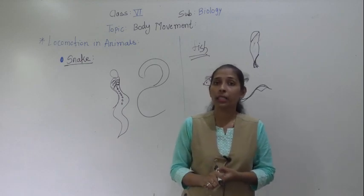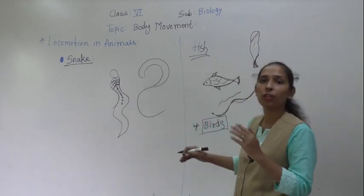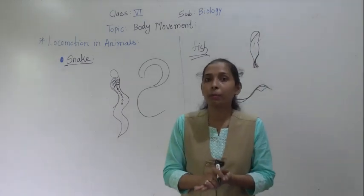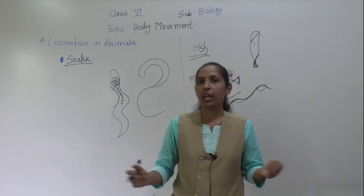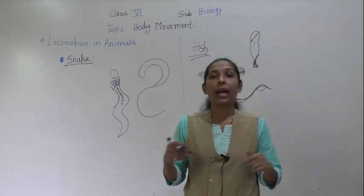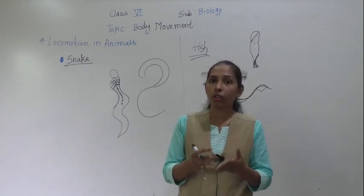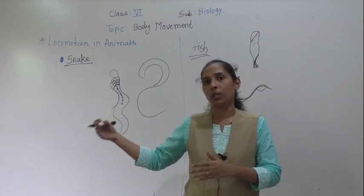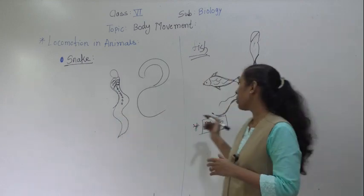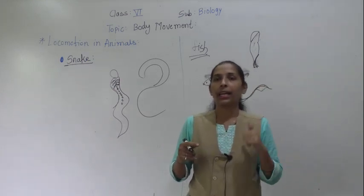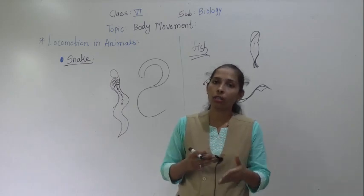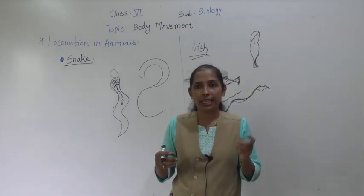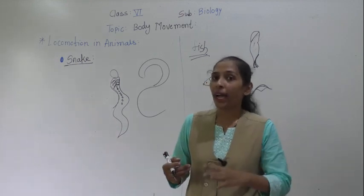Birds fly very high in the sky. Let's discuss the body features that help birds to fly. First, the forelimbs of birds are modified into wings, and these wings help them to fly in the air. The hind limbs help them to walk on the ground and for perching — holding onto branches of trees properly when sitting on them. However, not all birds fly; some birds like swans and ducks can also swim.